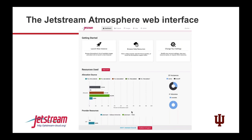Looking at the Atmosphere web interface: when you log into Jetstream via web browser, you see the dashboard with the big three buttons for launching new instances, getting help, and doing settings. Underneath you see your resources and your XSEDE allocation. Jetstream is 100% allocated through XSEDE. You can see how much you've used and exact numbers of SUs burned on each allocation. On my account I have five different allocations, and you can see each one and what you've actually burned.